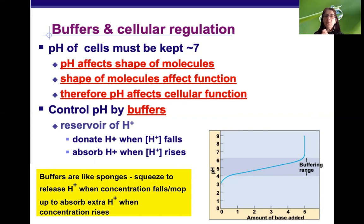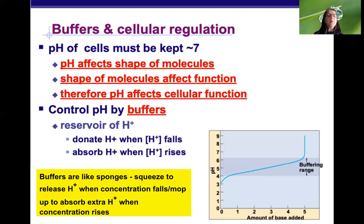Buffers are like sponges. A sponge can absorb water — if you spill water and put a sponge on it, the sponge soaks up the extra water. When you have a dry surface, you squeeze the sponge and it releases water. Similarly, buffers can absorb hydrogen ions when there's too much, or donate hydrogen ions when hydrogen ion levels fall. Use the sponge analogy to remember what buffers do.